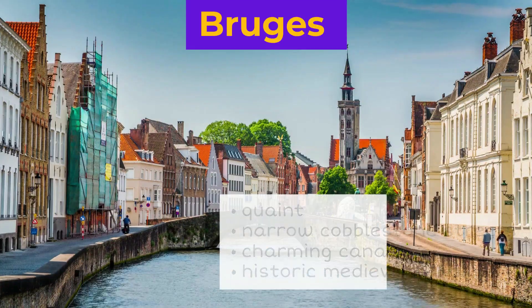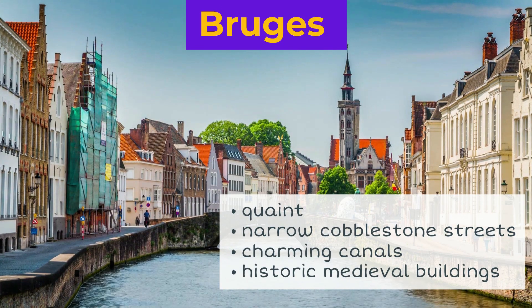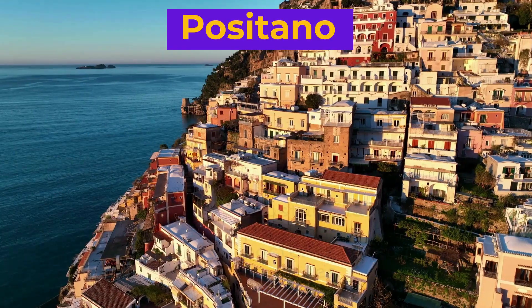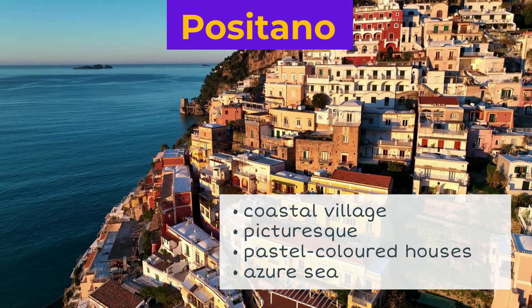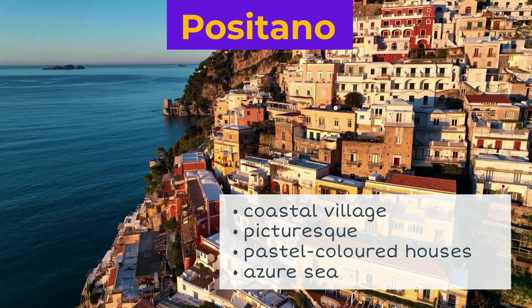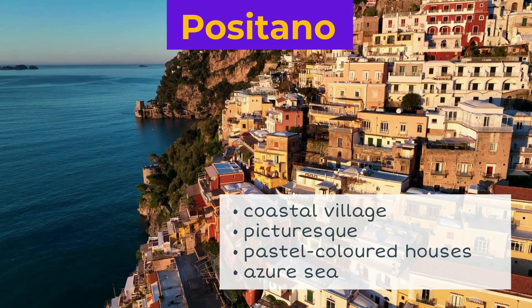Bruges is quaint with its narrow cobblestone streets, charming canals and historic medieval buildings. The coastal village of Positano is simply picturesque with its pastel-colored houses cascading down the cliffs towards the azure sea. Have you ever lived in these cities, or you may be living there now? Share your experiences in the comments!